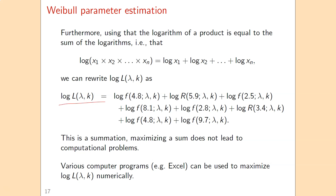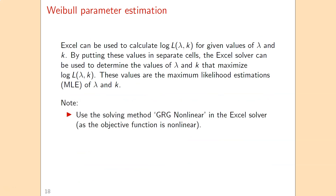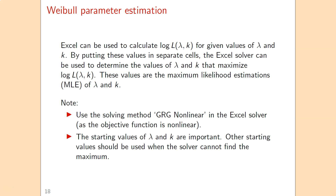We go back to Excel to maximize the logarithm of the likelihood by changing lambda and k. We choose values for lambda and k to maximize this function using the Excel Solver. The objective is nonlinear, so we use the solving method GRG Nonlinear. Also note that the starting values of lambda and k are important — if you start too far from the optimal values, the solver may not find the optimal solution.